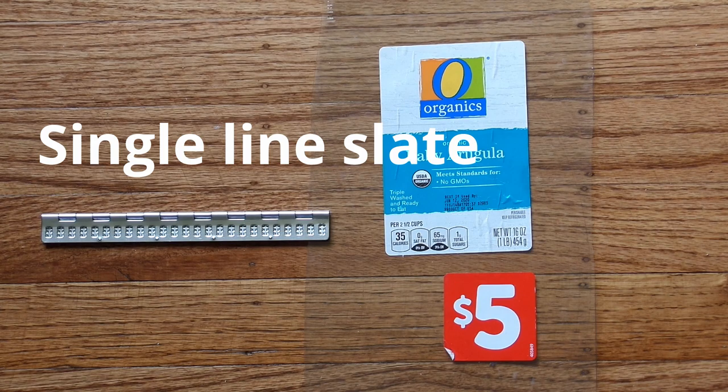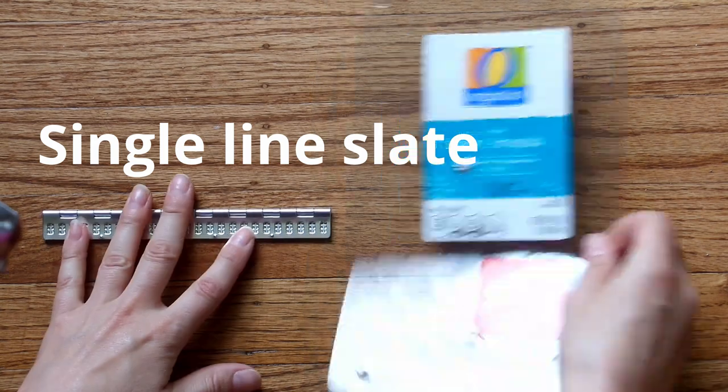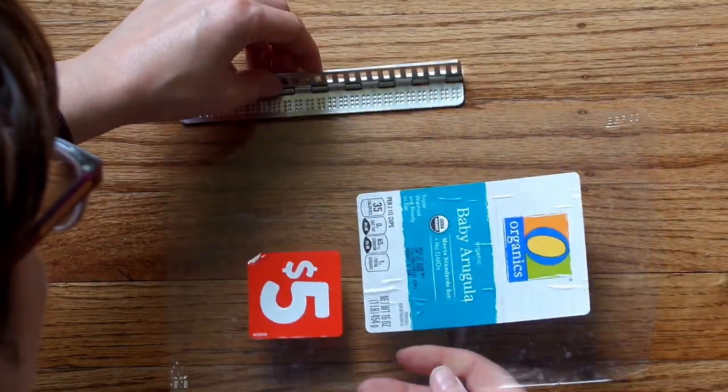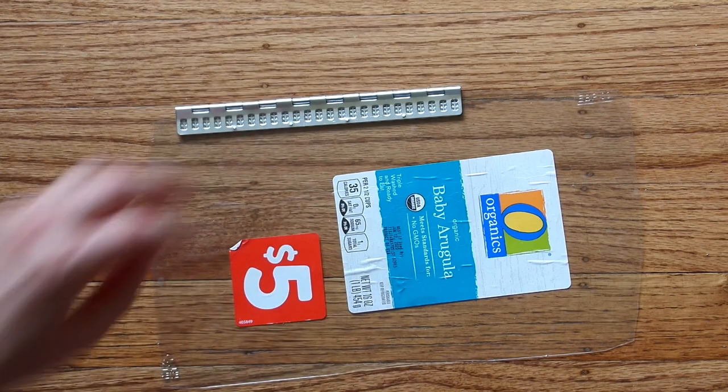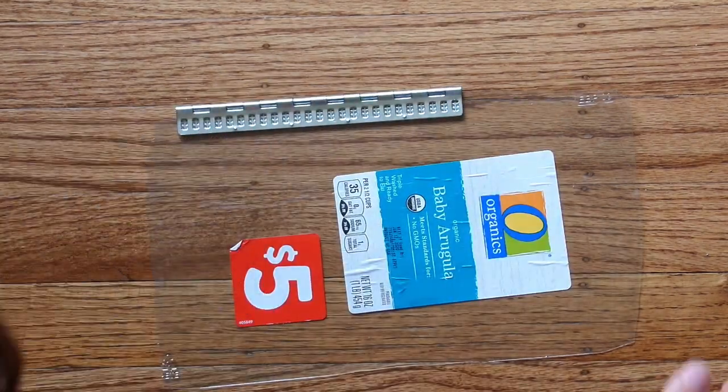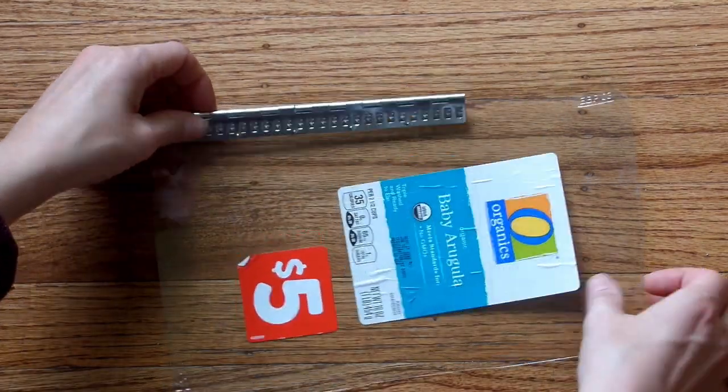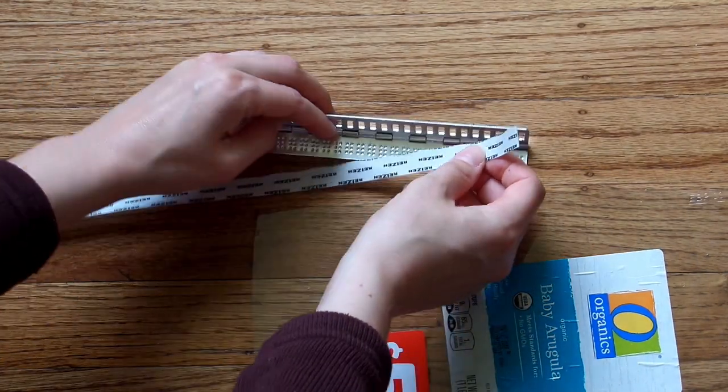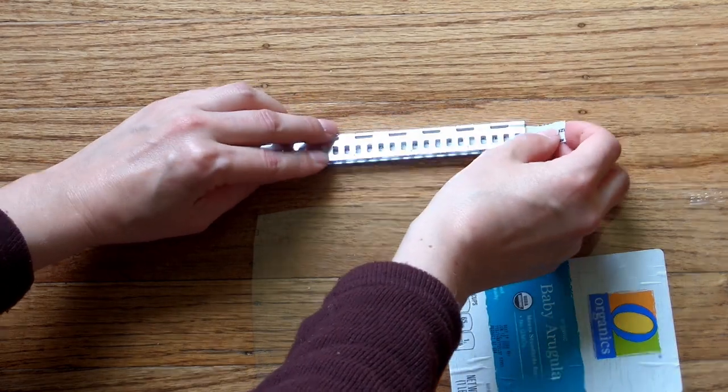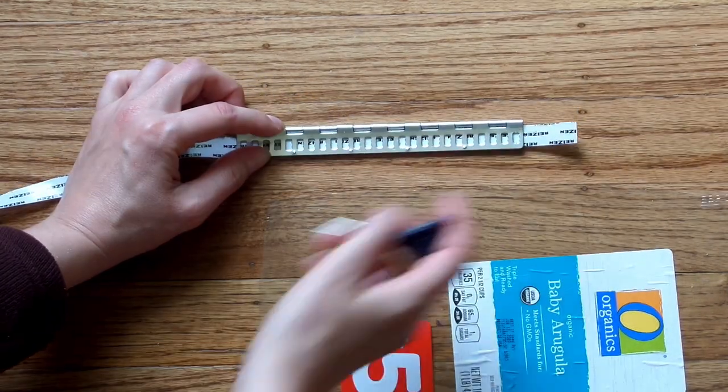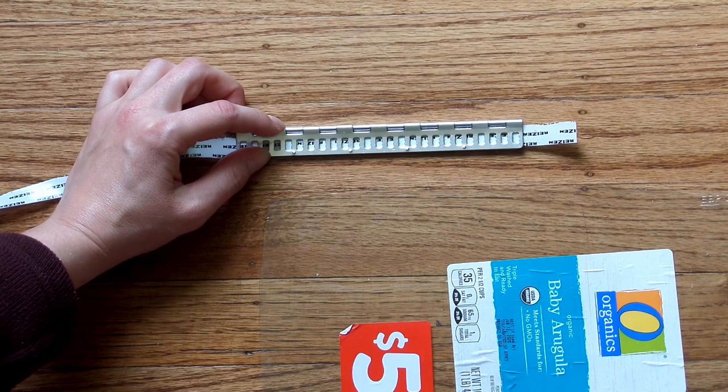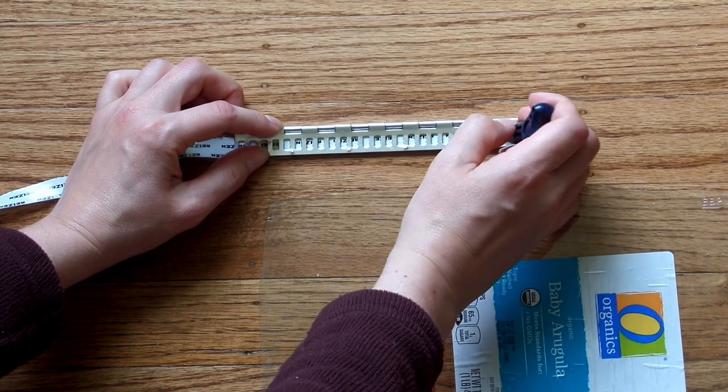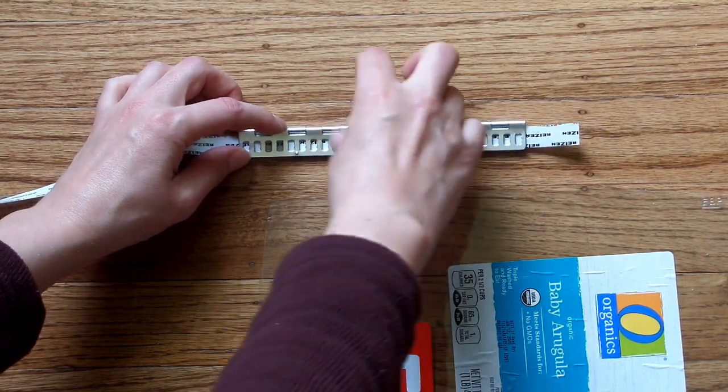So this is a one-line slate specifically designed for writing labels. I could take this plastic salad lid, put it in the slate, and then just start writing right to left. So this is a 25-cell slate. You can take label tape, if you don't want to make your own, and just put it in the slate. Make sure the label is in there backwards, because you are writing on the back side of the label. And then just go ahead and start punching your labels.